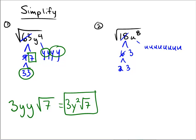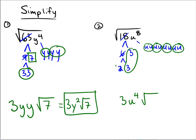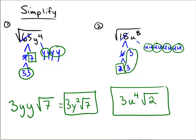U to the 8th gives us eight u's. So how many pairs do we get this time? We get a pair of 3's, and 1, 2, 3, 4 pairs of u's — so I'll write down u to the fourth. And then who's left in prison? Just the 2 by itself. So the final answer to this problem would be 3u to the fourth square root of 2.